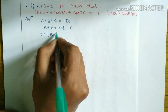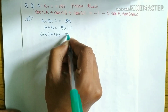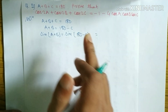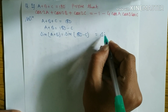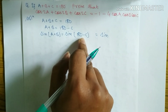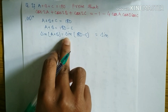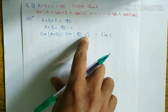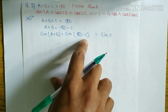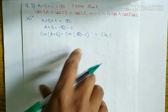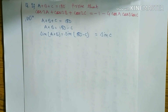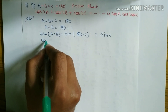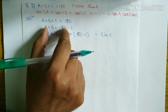Taking sine of both sides: sine(A+B) equals sine(180 minus C). Since 180 minus C is in the second quadrant and sine is positive in the second quadrant, we can write sine C. So sine(A+B) equals sine C. Similarly, we also take cosine of both sides.